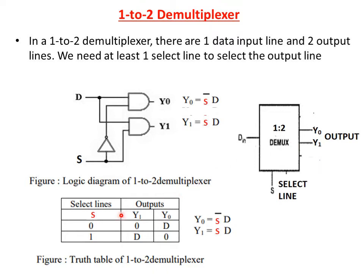Now see the function table. Here the selection line S, the inputs are considered as 0 and 1, and the outputs are Y0 and Y1. When the selection line input is 0, the output D is selected, so Y0 is equal to S bar D. And when the selection input S is equal to 1, the output is Y1, so the output equation is Y1 is equal to S D. This is the truth table representation.